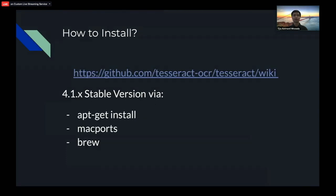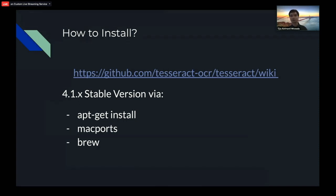To install, you can go directly to github.com/tesseract-ocr/tesseract/wiki. For the latest stable version, use apt-get install on Ubuntu, or Mac Ports or Homebrew on Mac, depending on your setup.